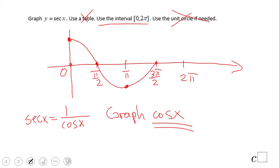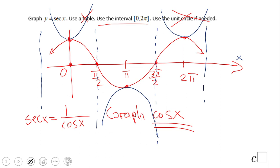Now if I have this graph, the secant is going to be very easy. Draw some vertical lines where the graph crosses the x-axis and draw U shapes. And that's it, this is the graph of y equals secant of x.